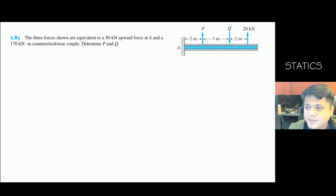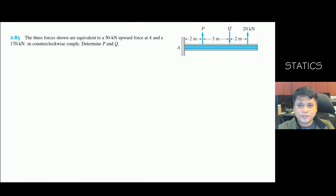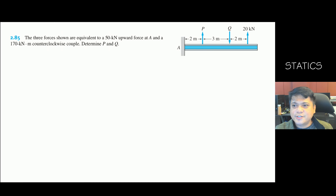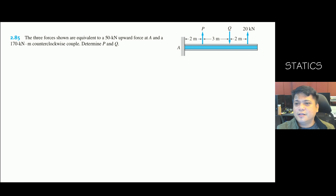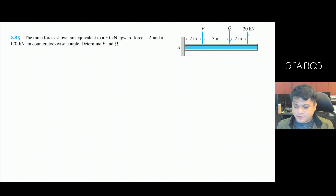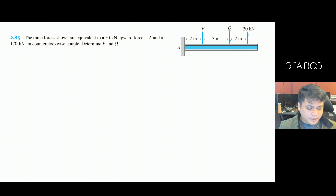Let's have problem 2.25. The three forces shown are equivalent to a 50-kilonewton upward force at A and a 170 kilonewton-meter counterclockwise couple. Determine P and Q.